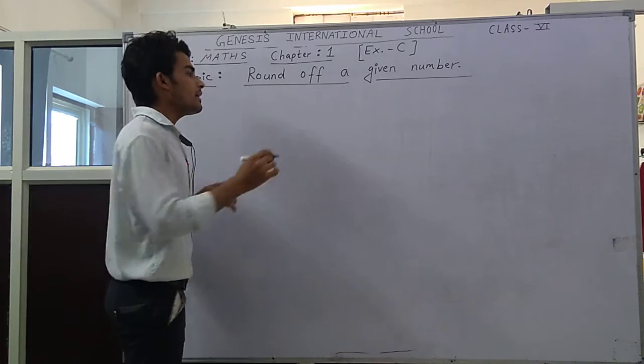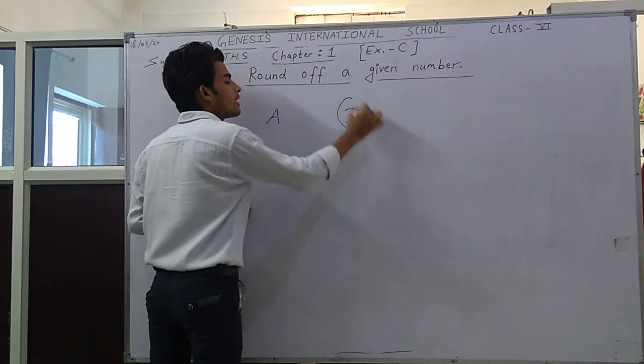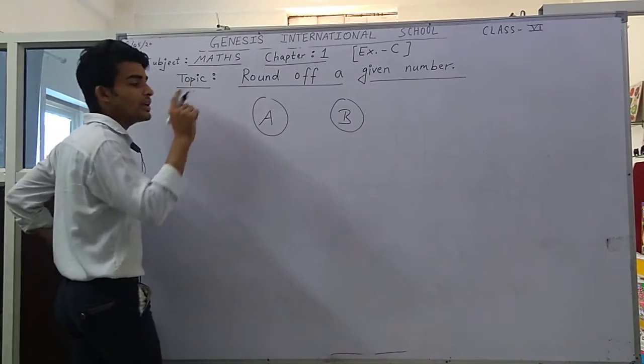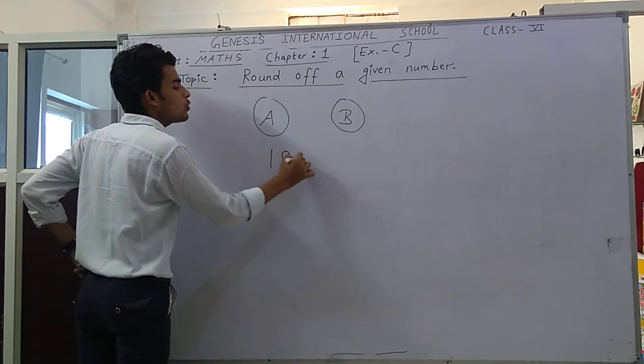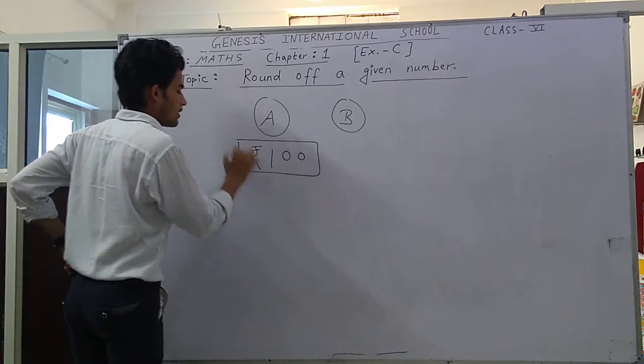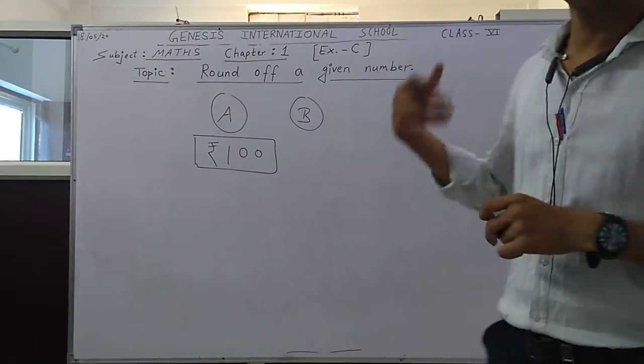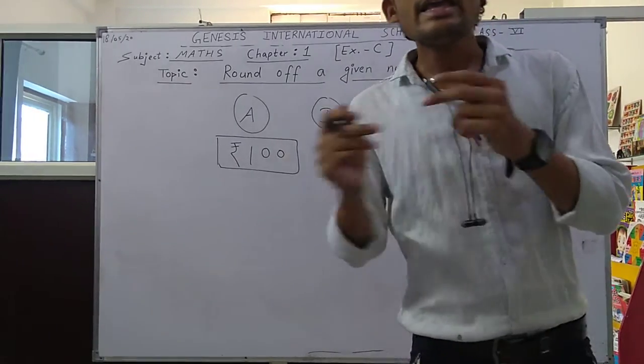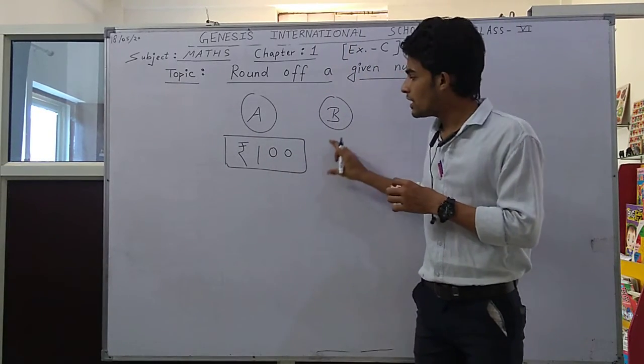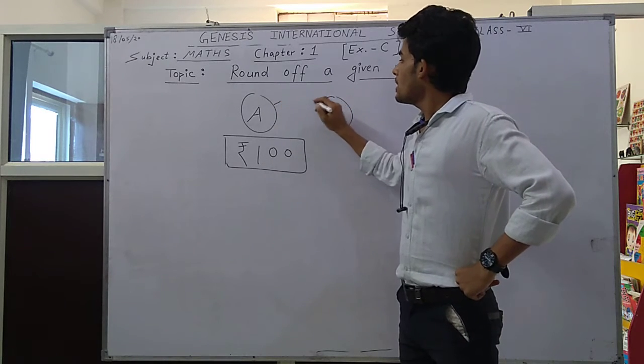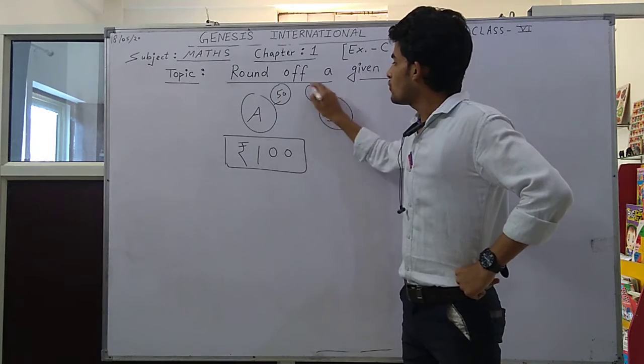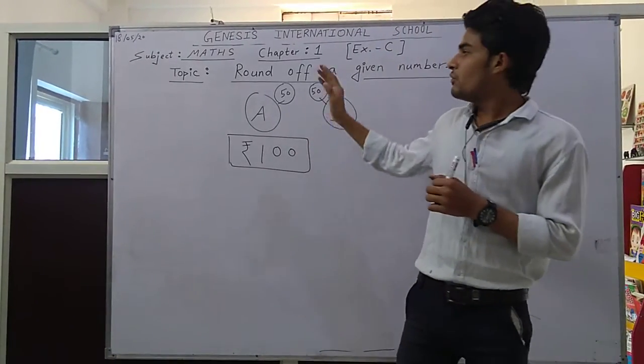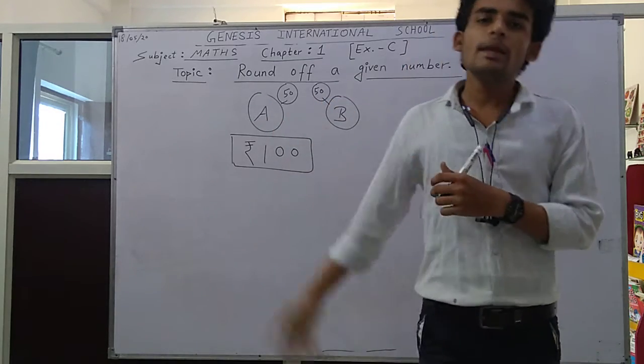Before coming to the exercise, we should learn what is the meaning of rounding of a given number. For example, consider there are two persons, A and B. If I want to divide hundred rupees in both of these persons equally, then A and B both will get 50 rupees each.